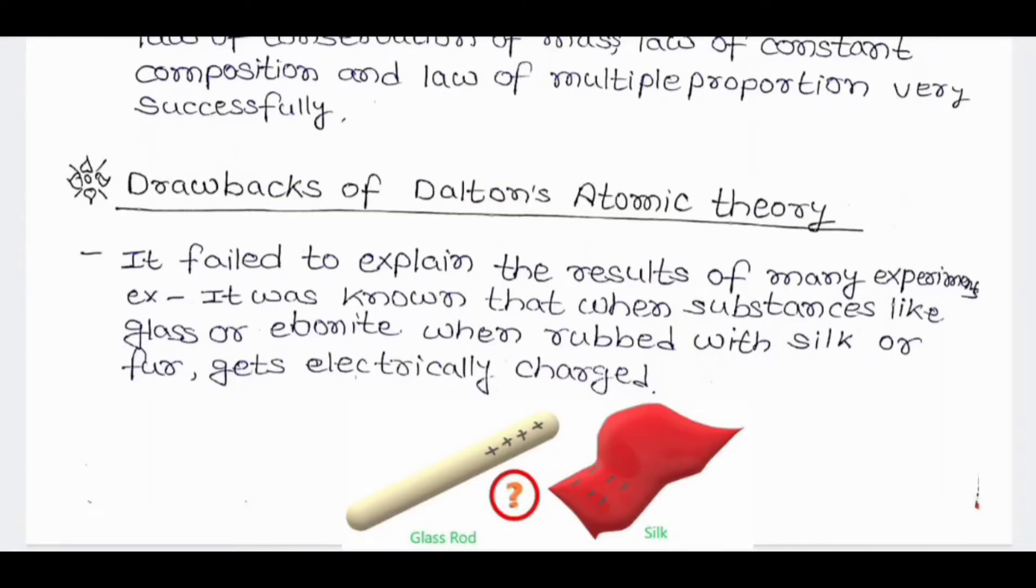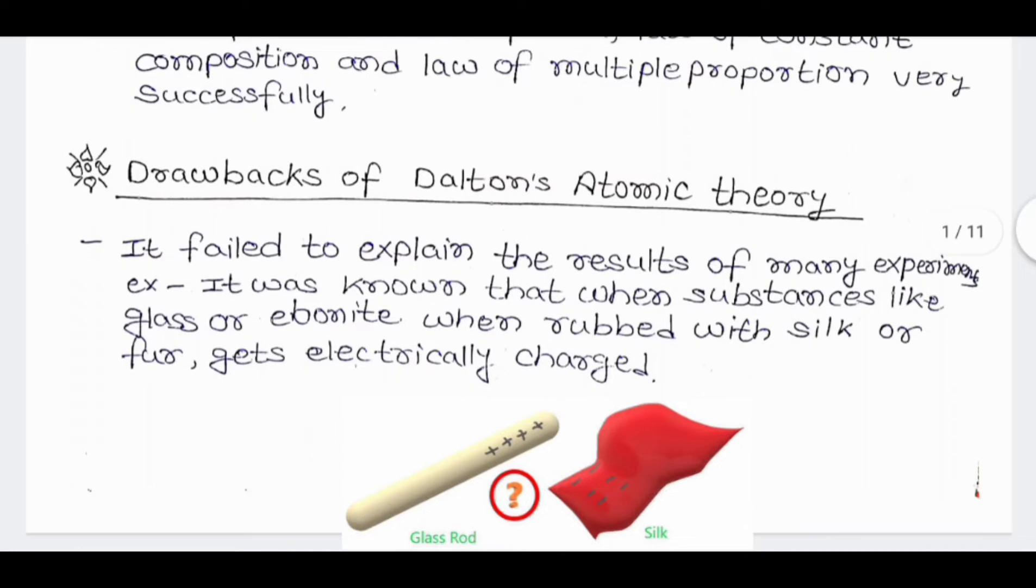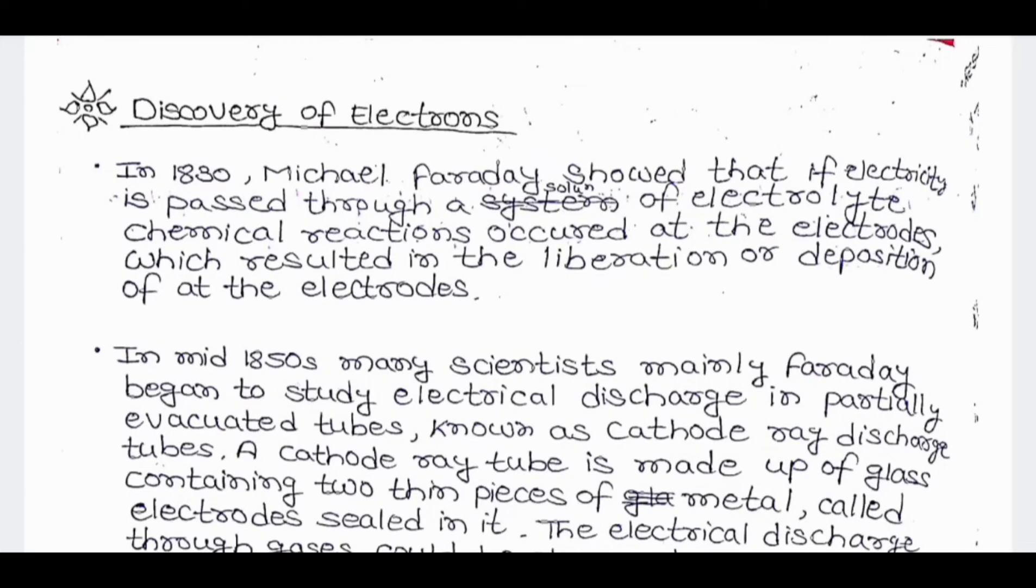Drawbacks of Dalton's atomic theory: Dalton's atomic theory failed to explain the result of many experiments. For example, it was known that when substances like glass or ebonite when rubbed with silk or fur gets electrically charged.